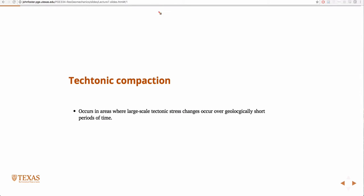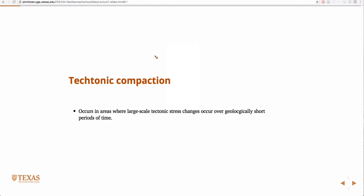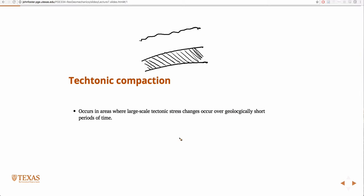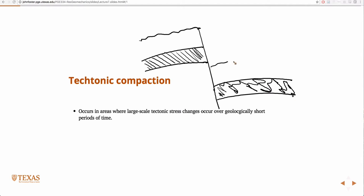There's another mechanism that's pretty well understood: tectonic compaction. You can imagine that you had some sealed reservoir with some overburden above it. Something that happens relatively quickly on a geologic timescale is faulting, which separates your sealed reservoir into two sealed reservoirs — essentially due to big earthquakes.